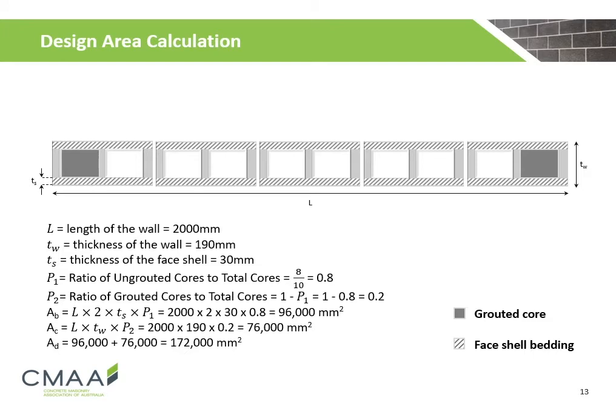Here we are calculating the design area of a 2,000 mm long wall with a wall thickness of 190 mm and a face shell thickness of 30 mm. There are a total of 10 cores, of which 2 are grouted and 8 are ungrouted. The ratio of ungrouted cores to total cores is 0.8, and the ratio of grouted cores to total cores is 0.2. The face shell bedded area is calculated to be 96,000 mm², the grouted area is 76,000 mm², and the design area is the sum of these two components: 172,000 mm².